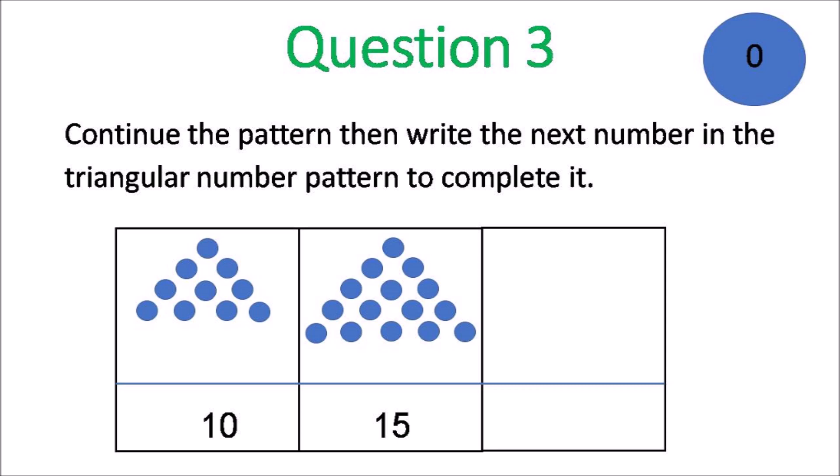Question 3. Continue the pattern and write the next number in the triangle number button to complete it. It starts with 10, then 15. Draw the next button and put the number in to complete that table.